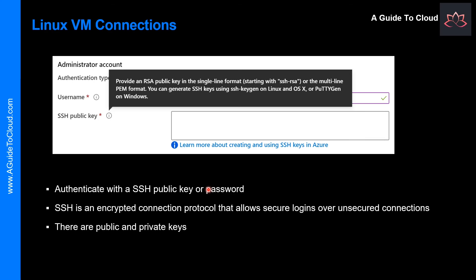The private key remains on your local system, protecting it so you don't have to share it. When you use an SSH client to connect to your Linux VM, the remote VM checks that the client has the matching private key — if it does, access is granted. Note that Azure currently requires at least a 2048-bit key length in SSH RSA format for public and private keys.